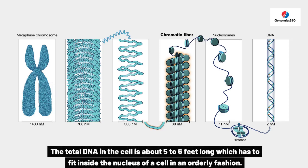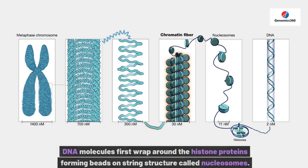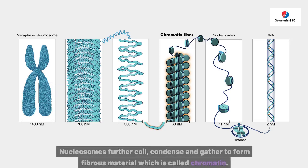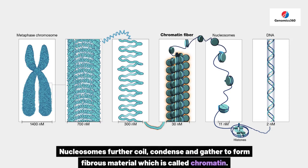The total DNA in the cell is about 5 to 6 feet long, which has to fit inside the nucleus of a cell in an orderly fashion. DNA molecules first wrap around the histone proteins, forming a beads-on-a-string structure called nucleosomes. Nucleosomes further coil, condense, and gather to form fibrous material which is called chromatin.